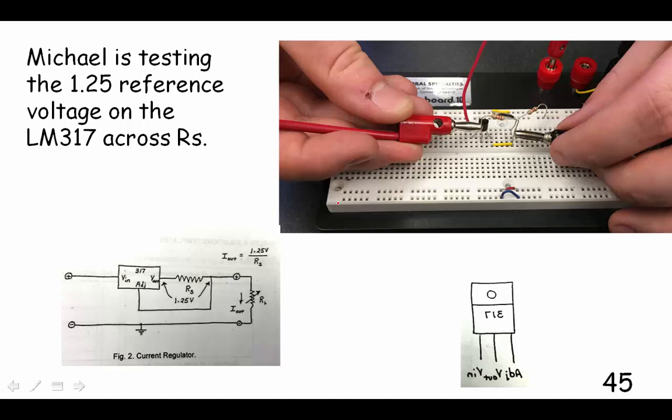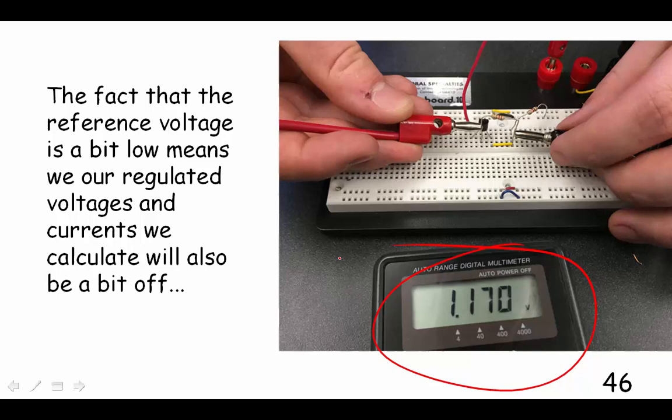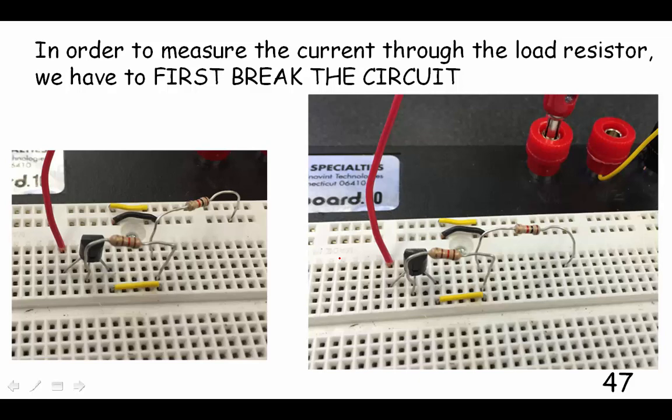But how are you going to measure anything? Because what you're going to have to measure here is the current, not the voltage. But before we do that, let's see what Michael is doing. Michael has a meter and he's put the two leads of his meter across this RS here to see if indeed the LM317 is putting out a 1.25 volts reference. Do you think it does? Not quite. It's 1.17 volts, so that's about 6% low. So that means that our calculated voltages and currents will be a little bit off from that.